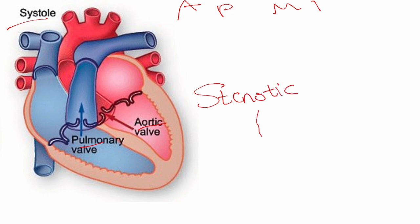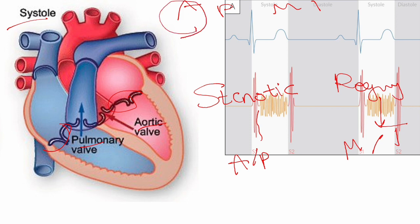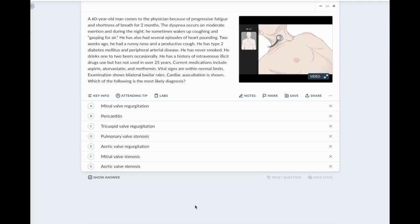Which valves should be closed during systole? The mitral and tricuspid — so if they are incompetent or regurgitant, that will cause a systolic murmur. So if the murmur is best heard over the second space — that's the aortic area — and it's systolic, then I know the valve should be open during systole, so it must be aortic stenosis. And so on.